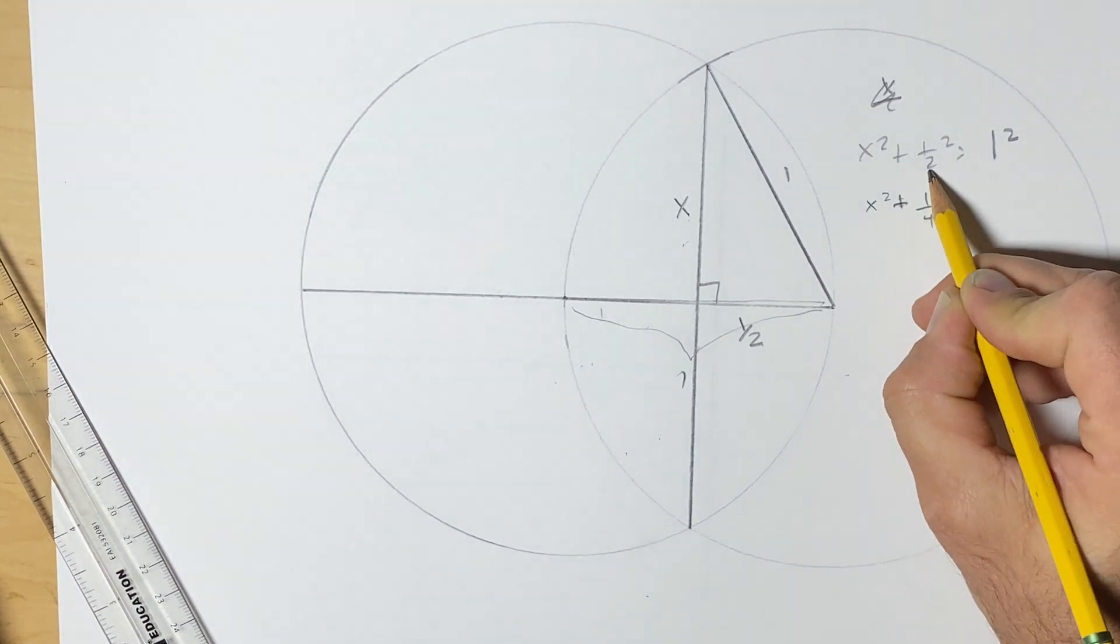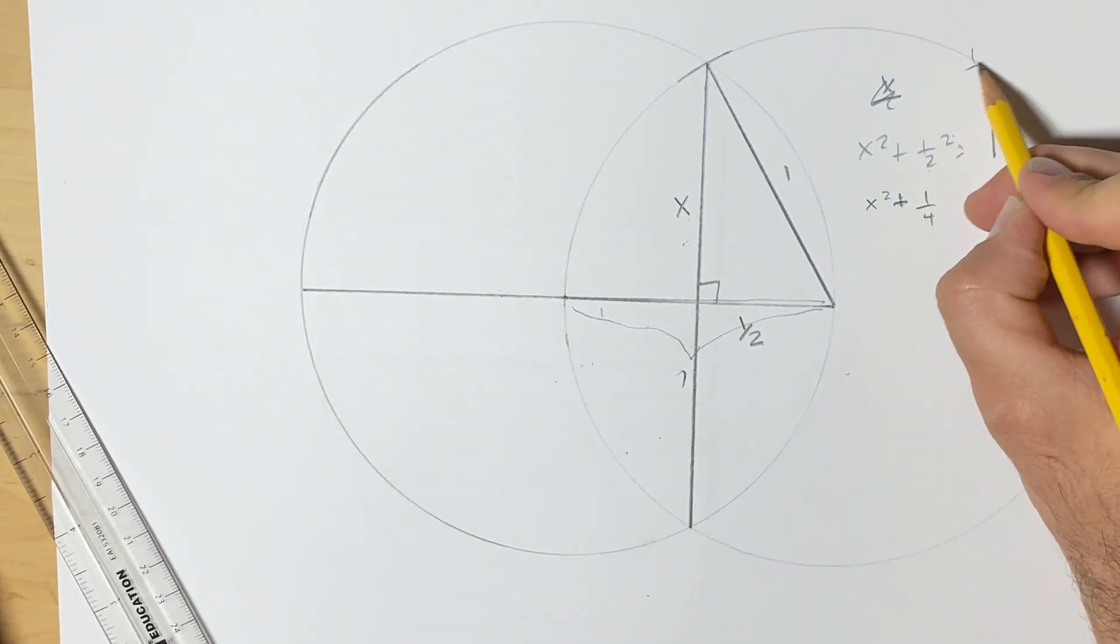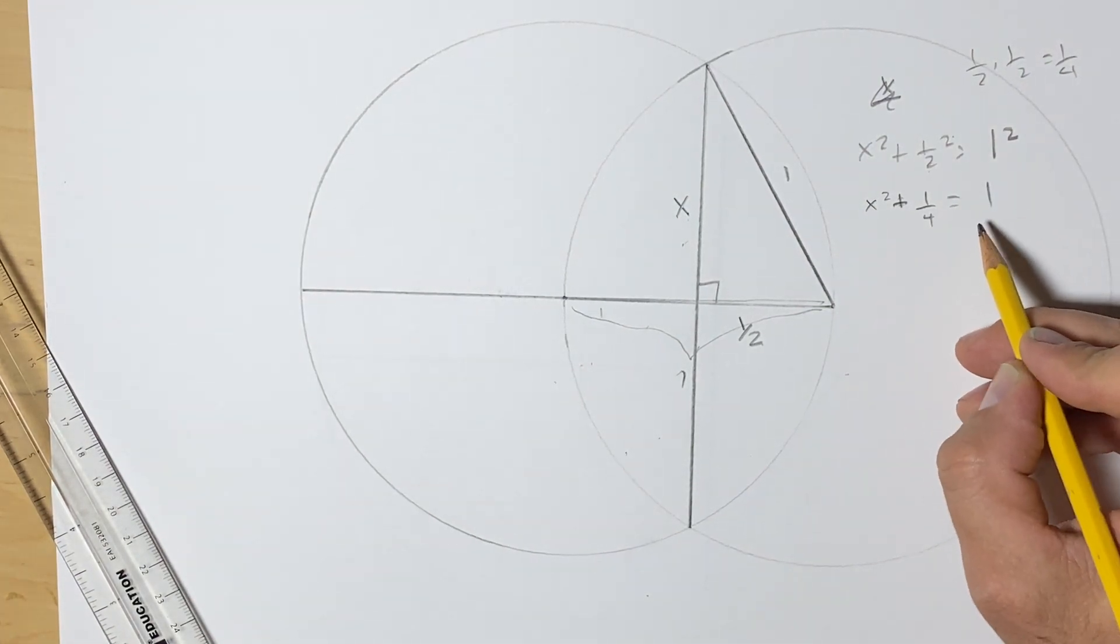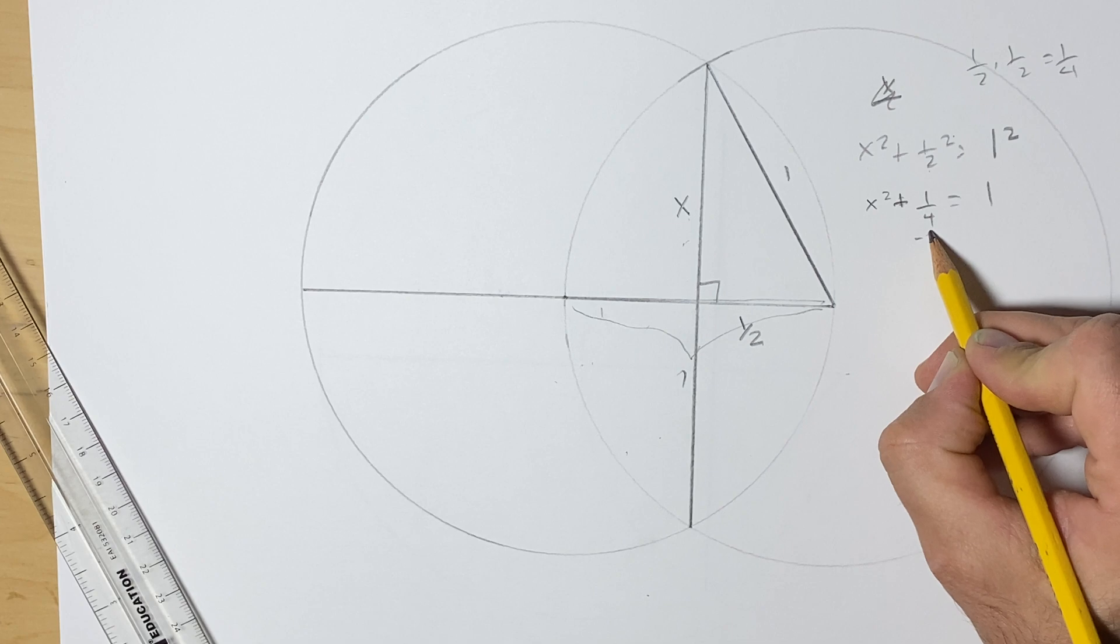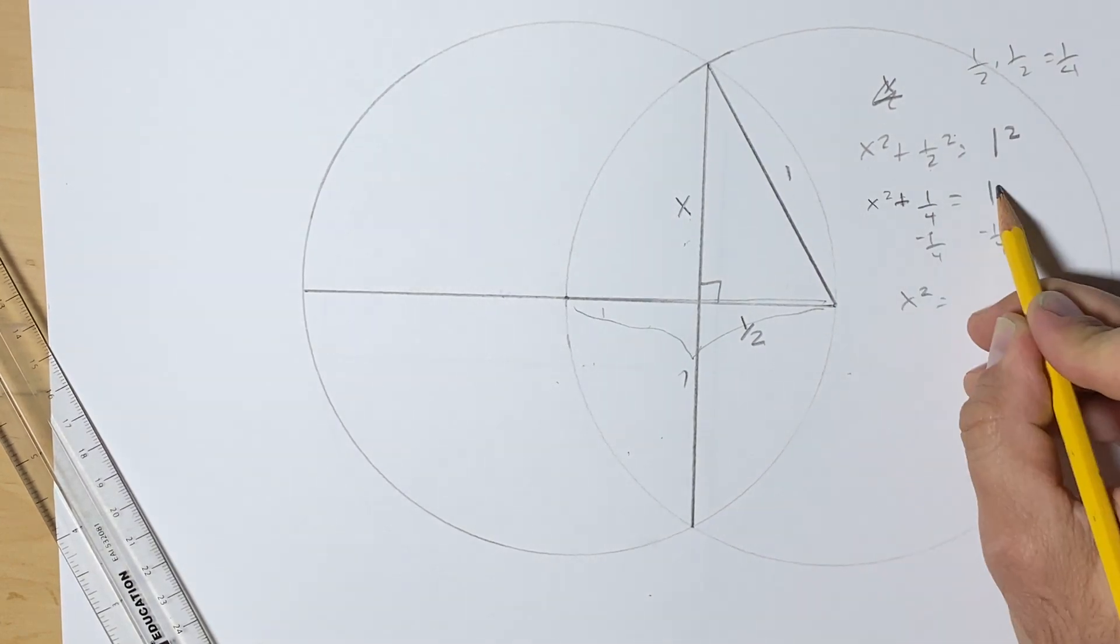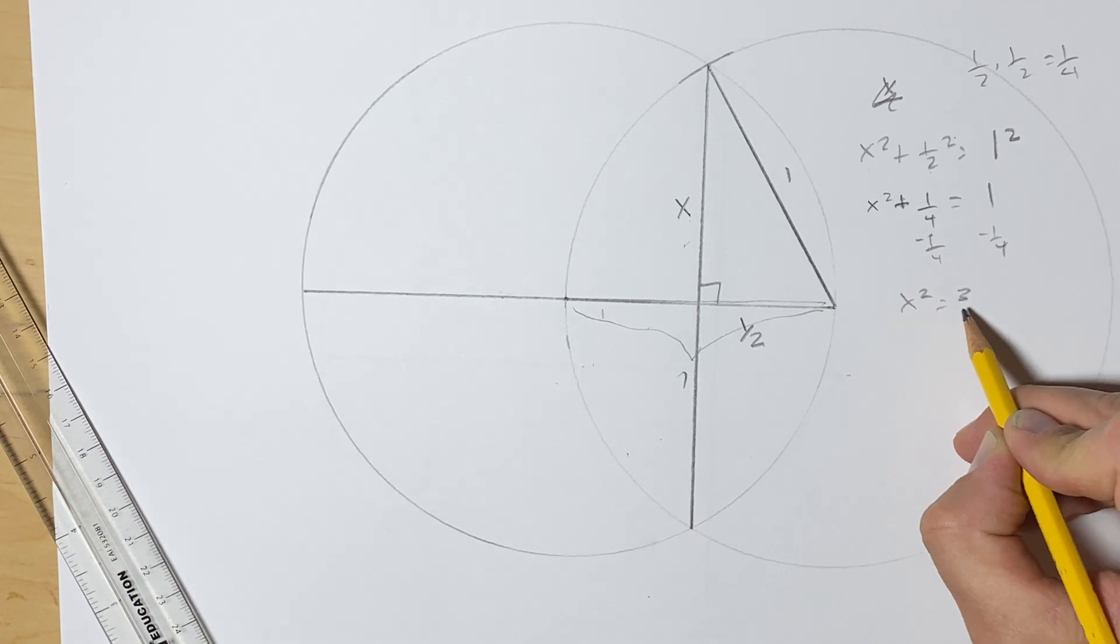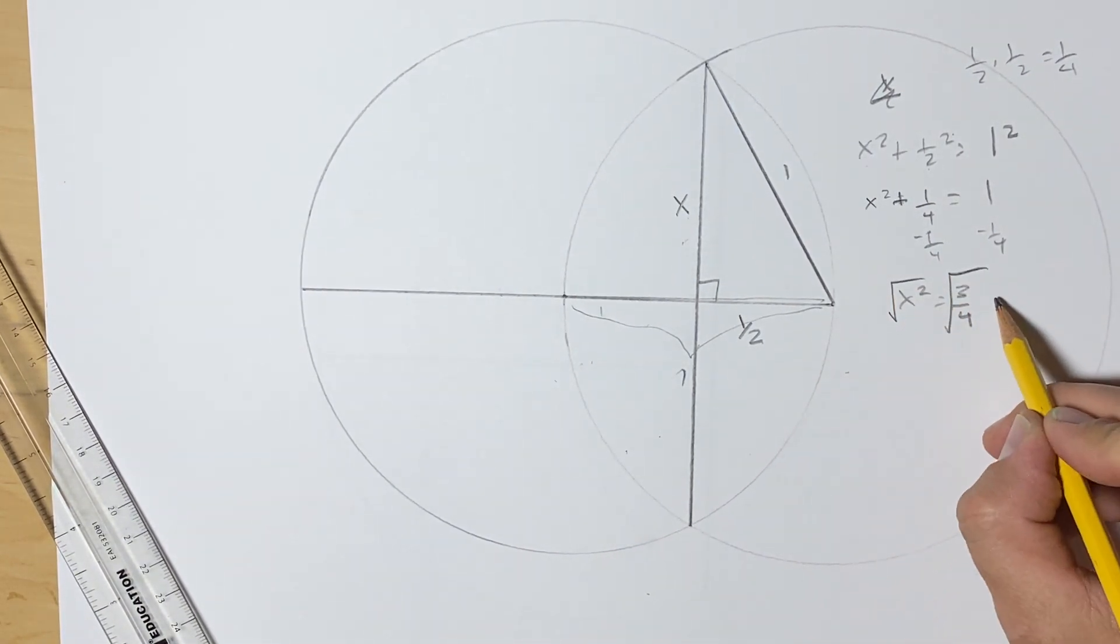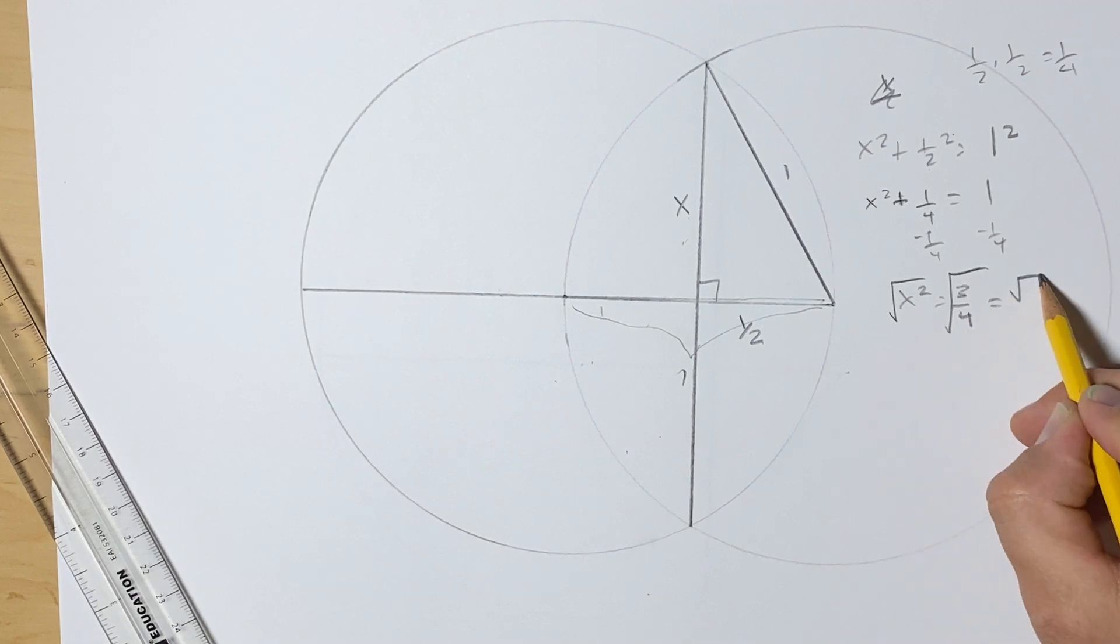We're going to square 1, we get 1/4. 1/2 squared means 1/2 times 1/2 which is 1/4, equals 1 times 1 which is 1. I'm going to subtract that on both sides, so x² is going to be 1 take away 1/4 will be 3/4.